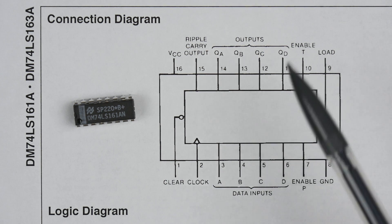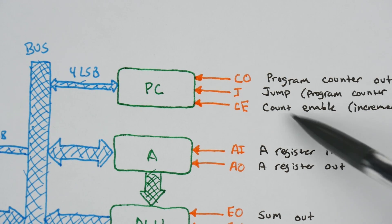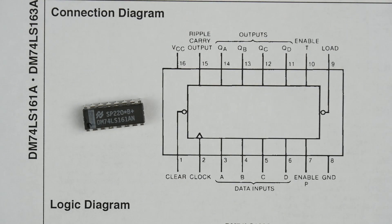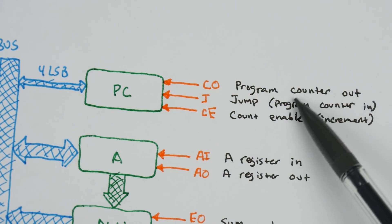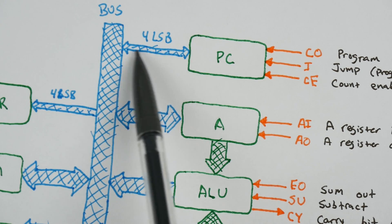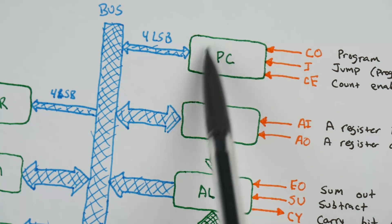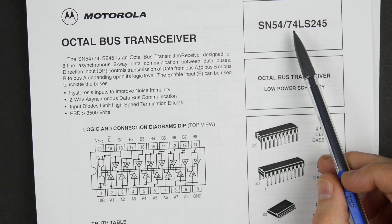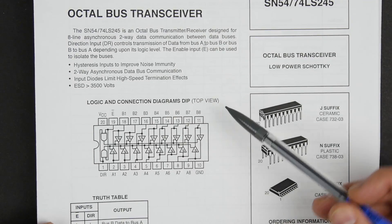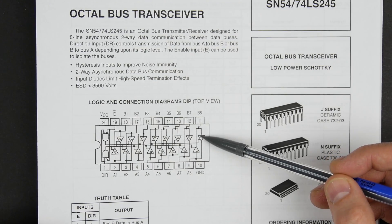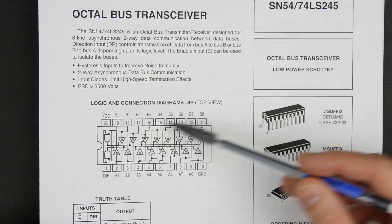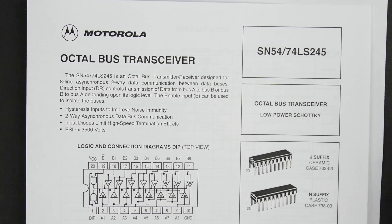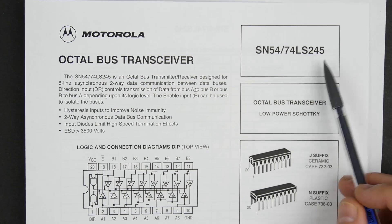The 74LS161 gives us almost everything we need for a program counter — the ability to control counting with the enable, and the ability to load a value to implement jump functionality using the load pin. However, it doesn't give us the program counter out function, because we need tri-state logic to interface with the bus and control whether the output values actually go out on the bus. For that we can use the same chip we've been using for all our other registers: the 74LS245, which has tri-state buffers to enable or isolate those bits. We're only going to use four of the eight bits, but that's fine — it's the same chip we've used for the A register, B register, RAM, and instruction register.